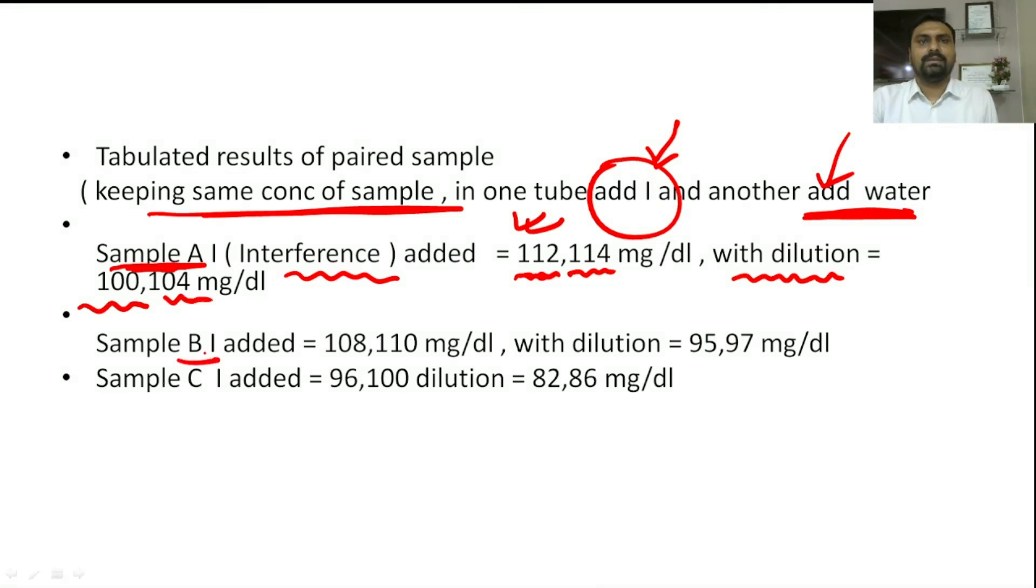For sample B, after adding interference material, we get the result 108 and 110. With dilution, we get the result 95 and 97. In sample C, when interference material is added, we get the result 96 and 100. With the dilution, we get 82 and 86.